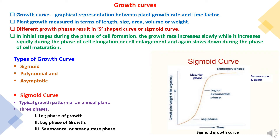In the initial stages during the phase of cell formation, the growth rate increases slowly. It increases rapidly during the phase of cell elongation or cell enlargement, and again slows down during the phase of cell maturation. Growth curves are divided into three types: first is the sigmoid curve, second is the polynomial curve, and third is the asymptotic curve. Under the sigmoid curve, there are three phases: the lag phase of growth, the log phase of growth, and the senescence or stationary phase.